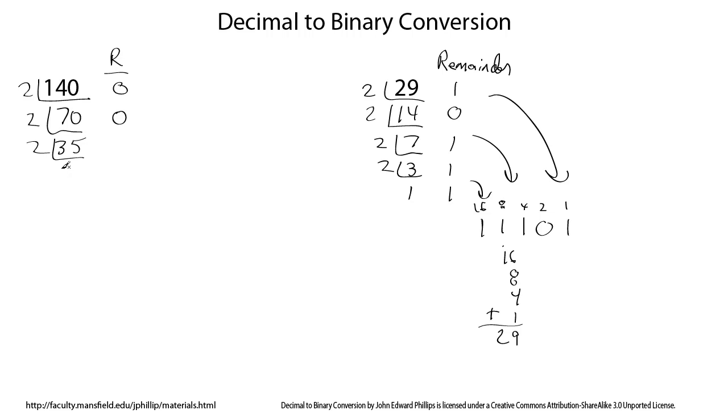2 goes into 35. Let's see. How many times is that? 17, I believe. 2 times 17 is 34. So there's 1 left over. And 2 goes into 17 8 times. 2 times 8 is 16. So we had 1 left over. In fact, whenever we have an odd number here instead of an even number, when it's an odd number, you'll have a 1 for your remainder.